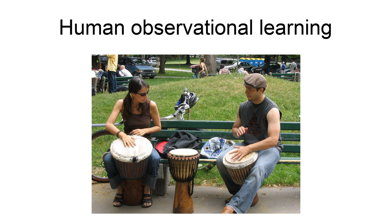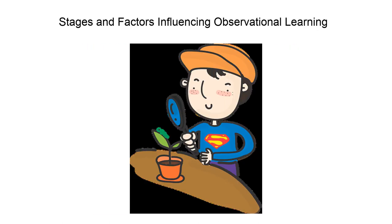The stages of observational learning include exposure to the model, acquiring the model's behavior, and accepting it as one's own. Bandura's social cognitive learning theory states that there are four factors that influence observational learning. The first is attention — observers cannot learn unless they pay attention to what's happening around them. This process is influenced by characteristics of the model, such as how much one likes or identifies with the model, and by characteristics of the observer, such as expectations or level of emotional arousal.